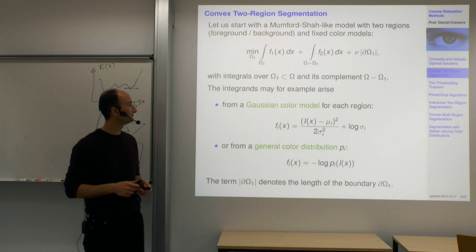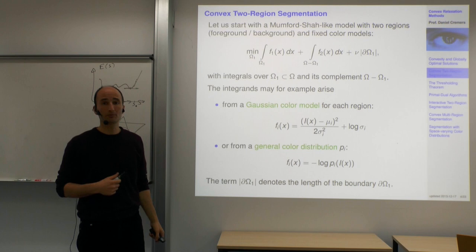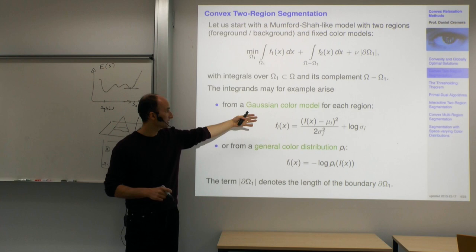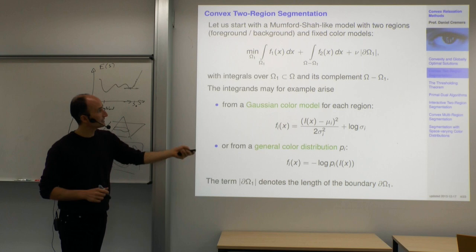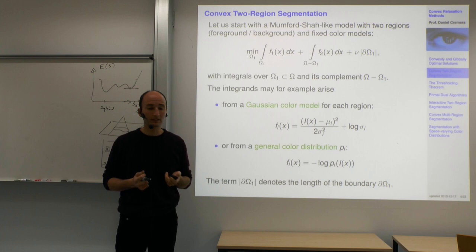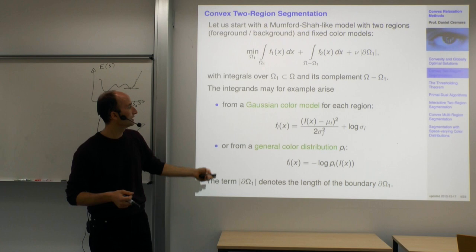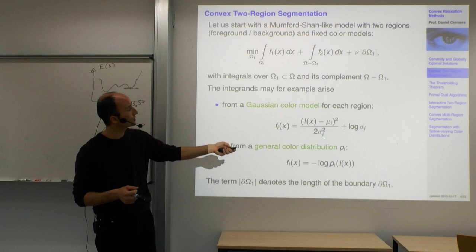The data terms F1 and F2 can be all sorts of data terms. For example, in the Mumford-Shah and its statistical generalization, if you assume that the intensity in region i can be represented as a Gaussian distribution with mean μᵢ and standard deviation σᵢ, then Fᵢ is the negative logarithm of that Gaussian.